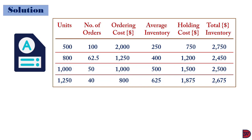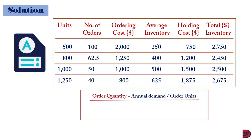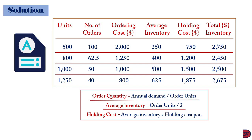Looking at the total inventory costs for these four order quantities, we should opt for the least. We are therefore choosing 800 units, meaning that at any particular point in time when the business is ordering, they have to order 800 units. The number of orders is the annual demand of 50,000 divided by the order units — 500, 800, 1,000, and 1,250. Average inventory is order units divided by 2, and holding cost is average inventory multiplied by the holding cost per unit.